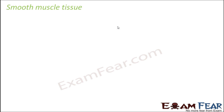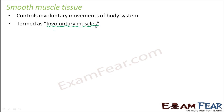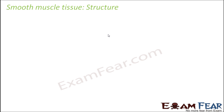Now let us talk about the next type of muscle tissue — smooth muscle tissue. These control the involuntary movements of the body system — those kinds of movements which are not under our control and do not happen as per our will. They are therefore also called involuntary muscles. They are also termed as unstriated muscles because there are no striations here. The alternate dark and light bands present in skeletal muscle tissue are no longer present here.